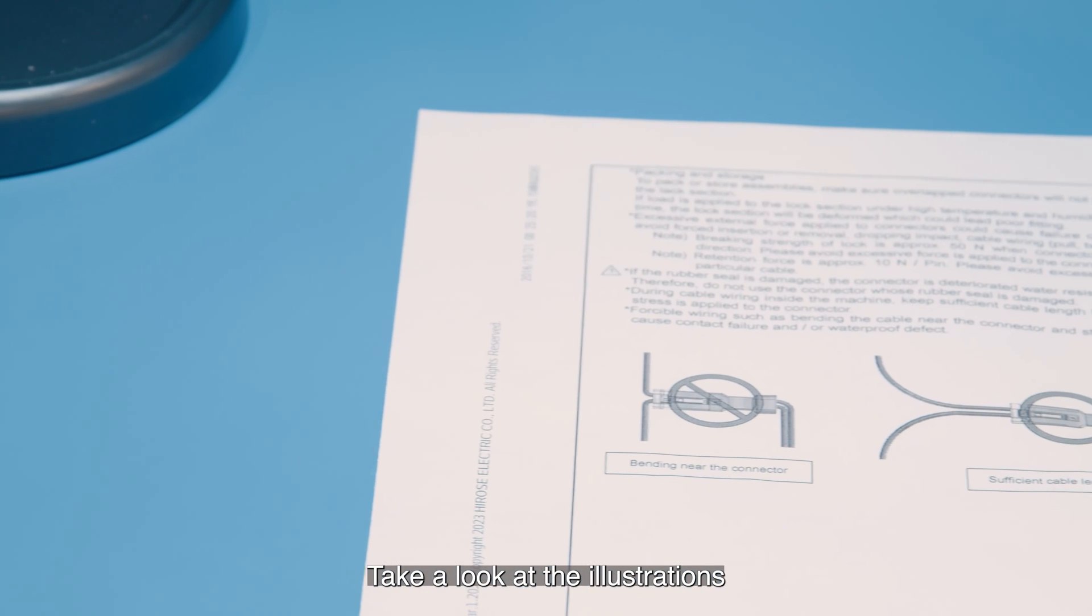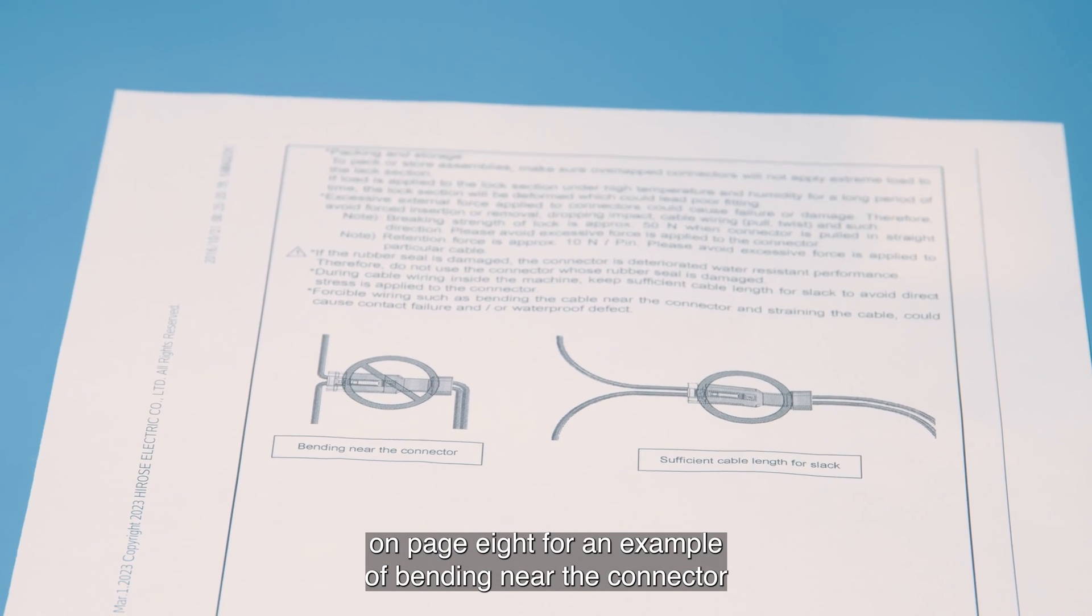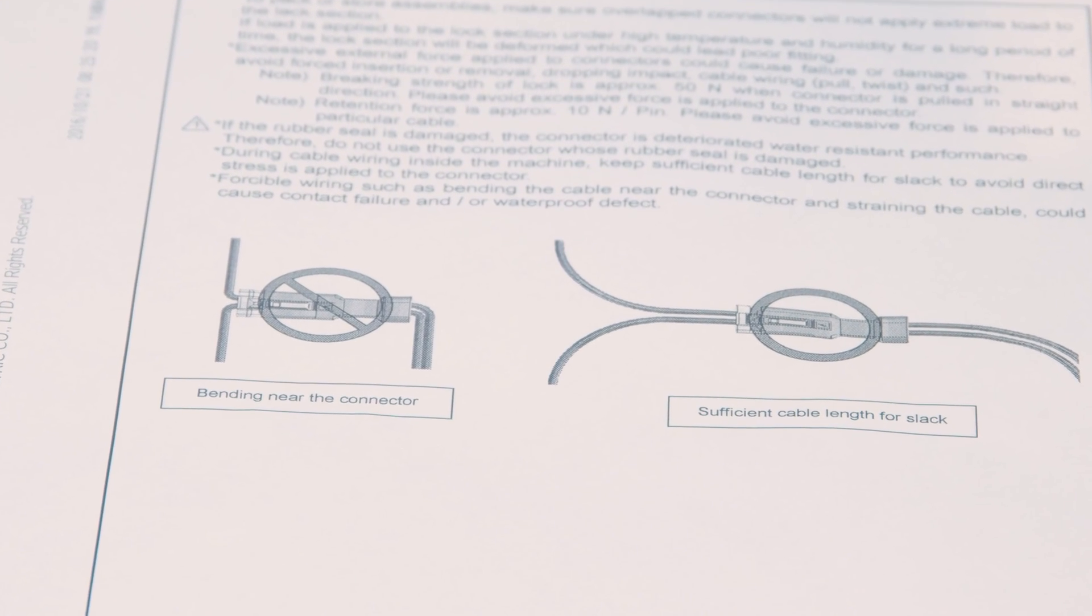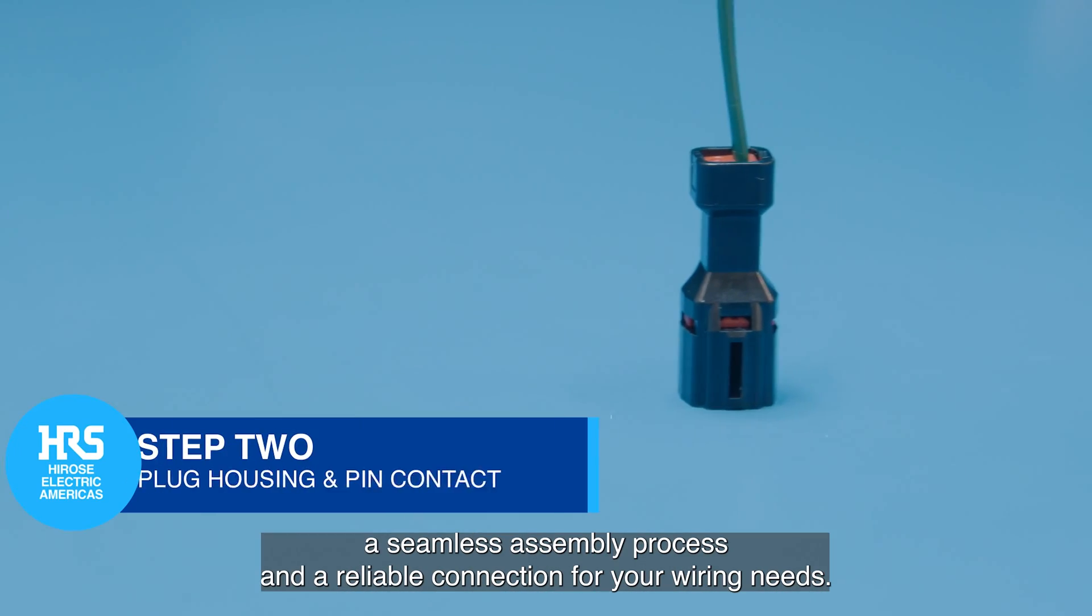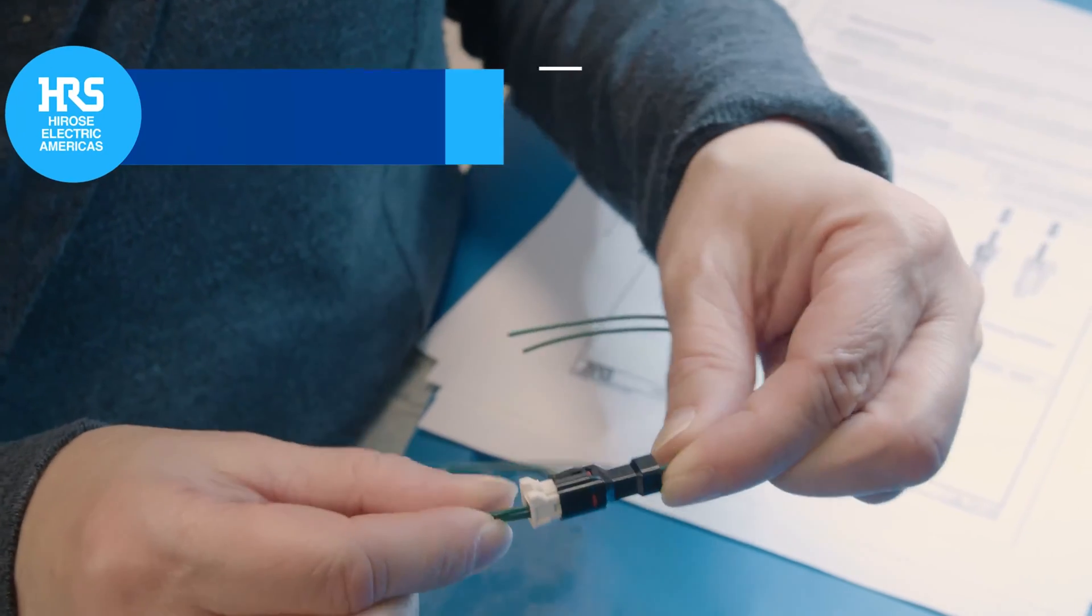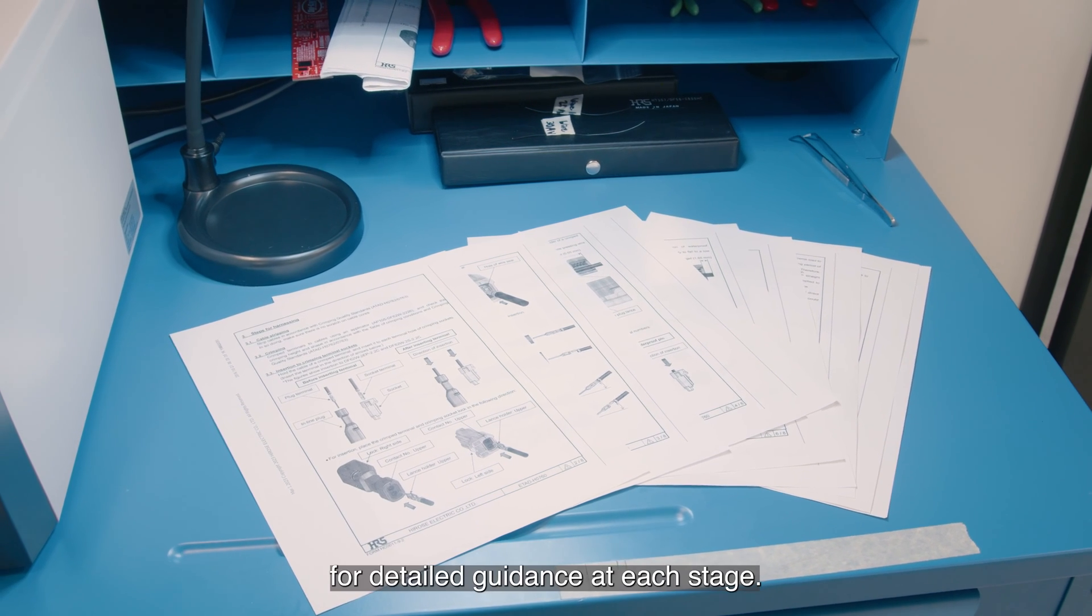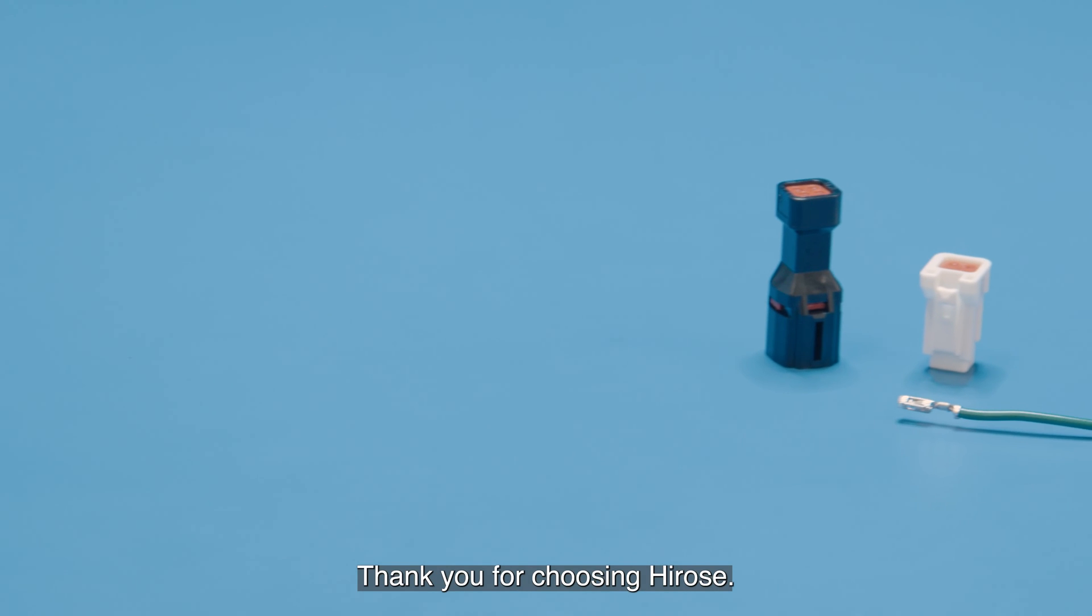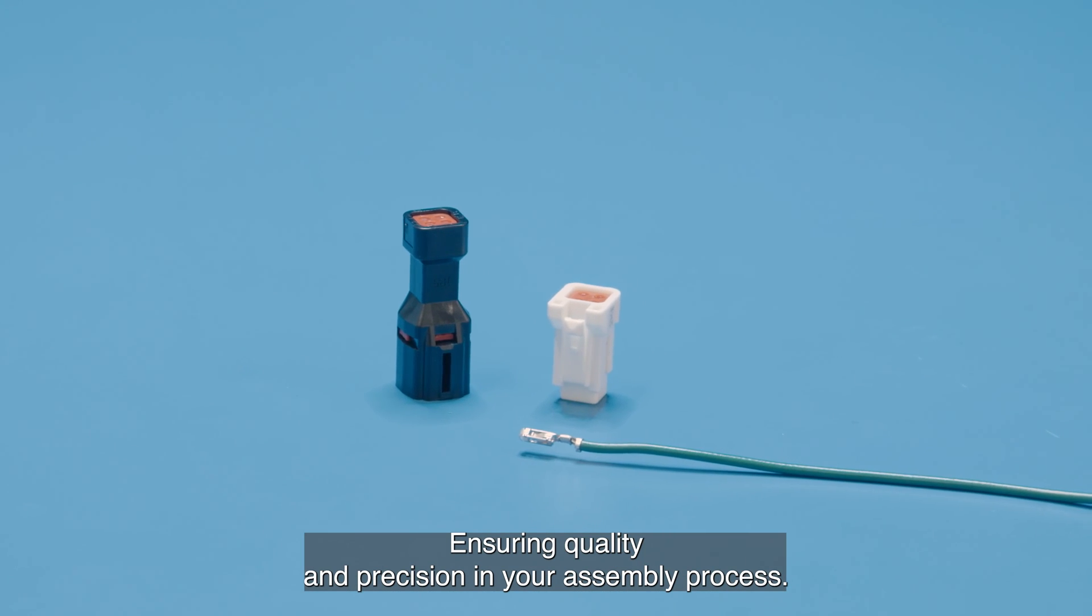Take a look at the illustrations on page 8 for an example of bending near the connector versus sufficient cable length for slack. By following the steps listed in this video, you'll ensure a seamless assembly process and a reliable connection for your wiring needs. Remember to consult the DF62W assembly instructions for detailed guidance at each stage. Thank you for choosing Hirose, ensuring quality and precision in your assembly process.